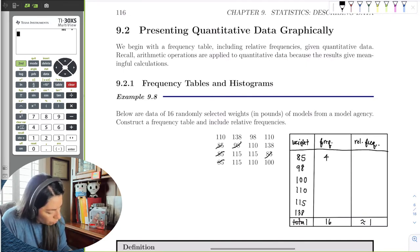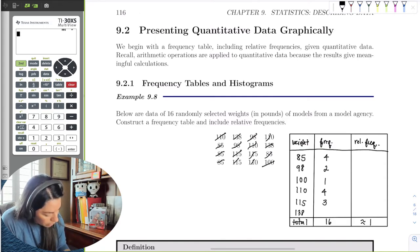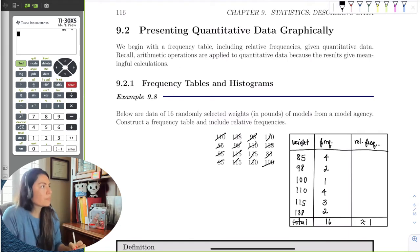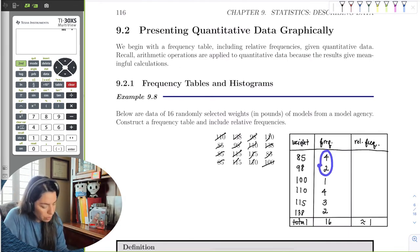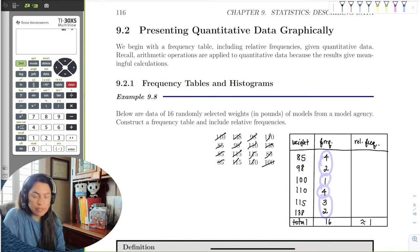98, 1, 2. 100s, 1. 110s, 1, 2, 3, 4. 115, 1, 2, 3. And 2, 138s. If I count them up, I get 4 plus 2 is 6, 7, 11, plus 5 is 16.